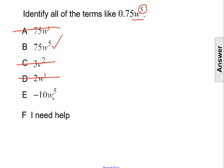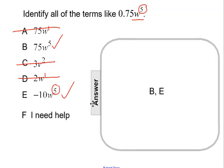And then E is negative 10 W to the fifth. Again, that will work. So our answer is B and E. 75 W to the fifth and negative 10 W to the fifth are like terms with 0.75 W to the fifth.